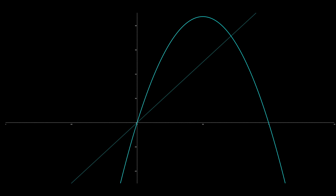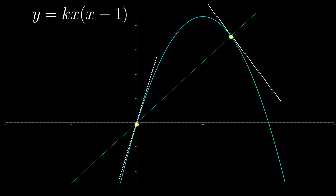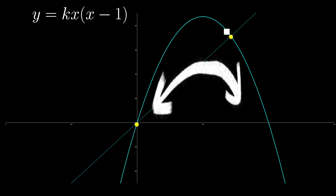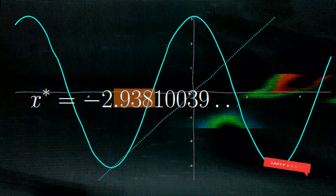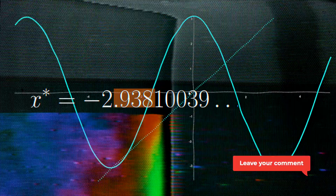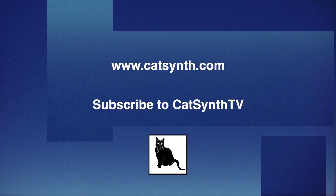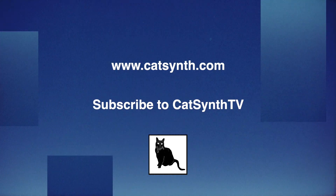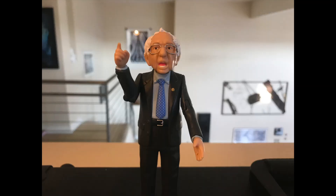But what if we turn this function on its head? This new function also has 2 fixed points, but the absolute value of both derivatives are greater than 1. To the left and right of the points, the iterations will go to infinity, but in between they will just bounce around chaotically. But that's a story for another video. Do you have thoughts about fixed point iterations? Please let us know in the comments below. Thanks for watching — check out more at www.catsynth.com, and please subscribe to CatSynth TV.